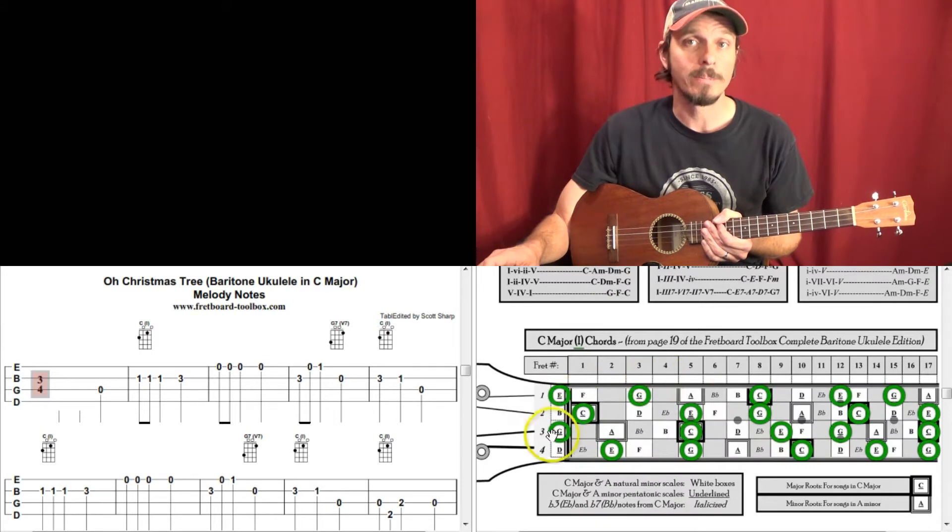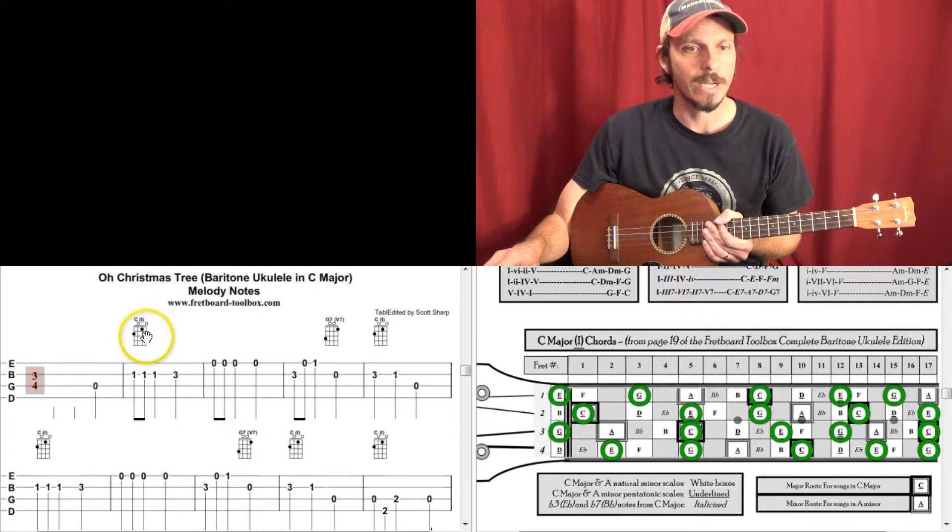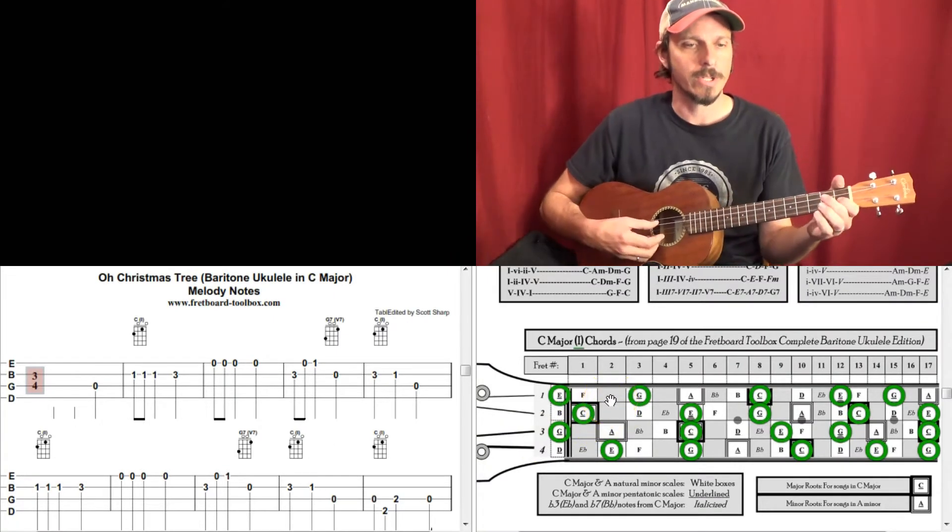So all these notes in white boxes are the major scale notes, and all the melody notes are going to come from the white boxes. Let's get started over here. We're starting out over a C major chord, and we're going to go open, 1, 1, 1. So the open is going to be this G note here, and then 1, 1, 1 is C notes.